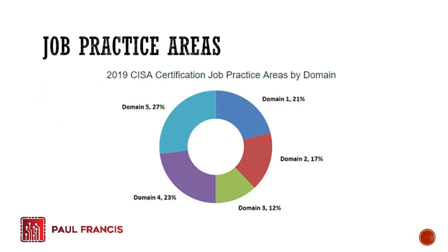For the 2019 CISA job practice areas by domain: Domain 1 is 21%, the same as 2016; Domain 2 is 17%; Domain 3 is 12%; Domain 4 is 23%; and Domain 5 is 27%. Multiply 150 questions by each percentage to get the number of questions per domain. Domain 5 increased from 25% to 27%, reflecting the growing importance of protecting information assets.